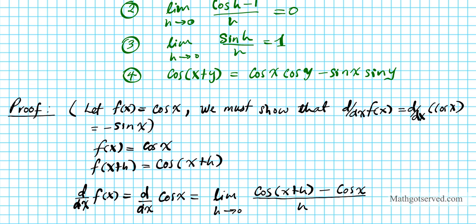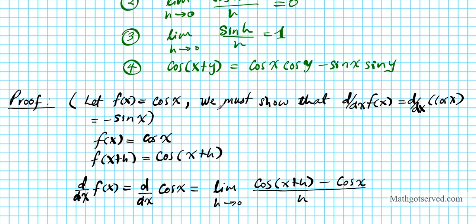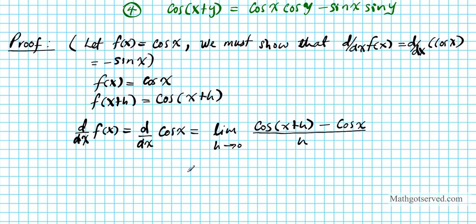Now what we're going to do next, we're going to make use of formula four, which is the sum identity for cosine to simplify, to break down this piece right here. So we're going to have the limit as h approaches 0 of cos(x+h), which is just like cosine x plus y but in this case y is h, which becomes cosine x cosine h minus sine x sine h minus cosine x, divided by h. I just applied the sum identity for cosine to break down cos(x+h).